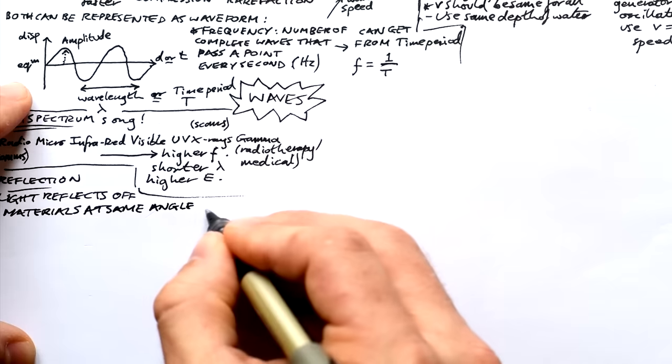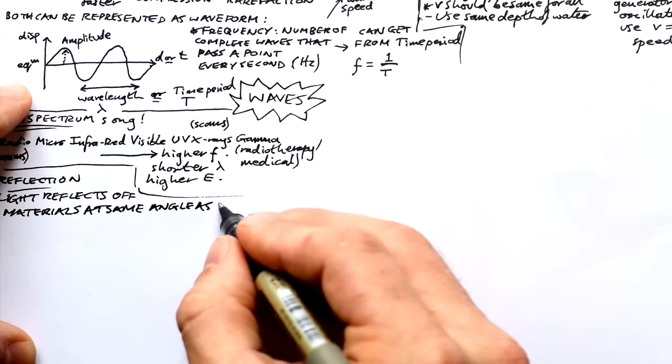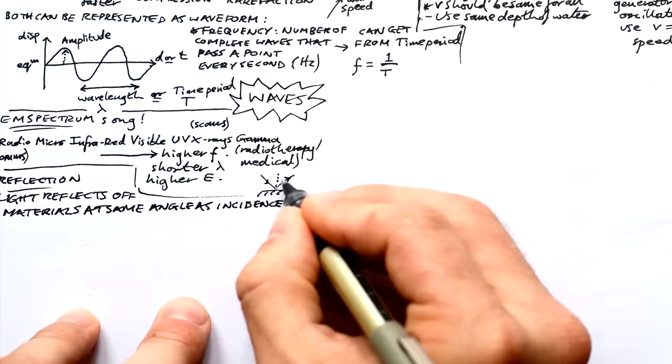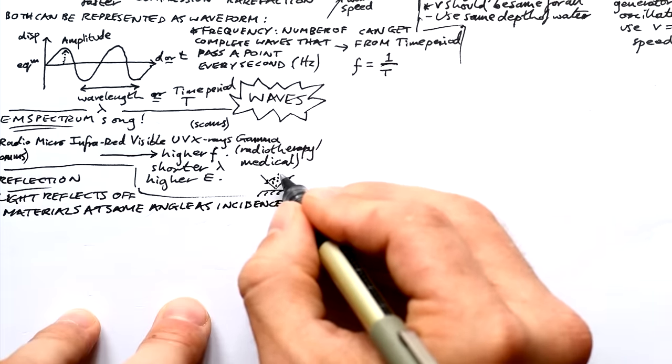Reflection, nice and easy. Light and other waves reflect off materials at the same angle as their angle of incidence. That's the angle they hit it at.